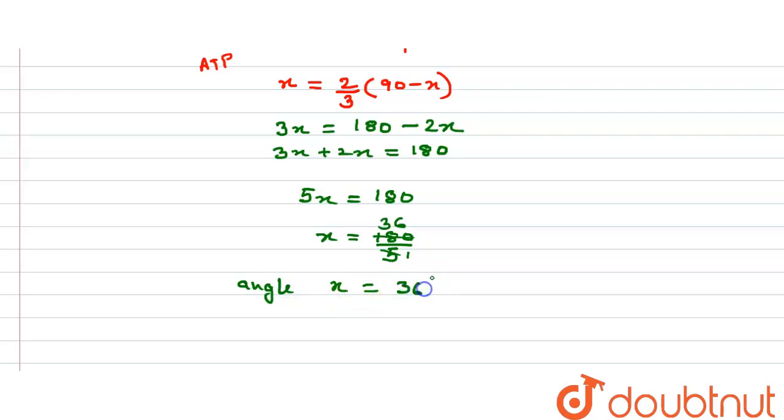Its complement is 90 minus x, which equals 90 minus 36, which equals 54 degrees. So this is the solution to the question. Thank you.